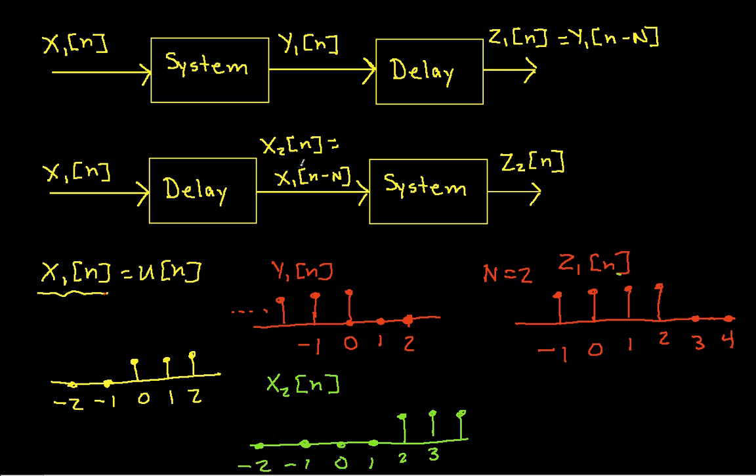So this x2 is now a signal that goes into my system. And again, my system, as we showed up here, takes the input signal and flips it about the value n is equal to 0. So when I do the flipping over here, we have 0, and then negative 1, negative 2, and negative 3 become 1, 2, and 3. 1 becomes negative 1. And 2, which has a value of 1, becomes negative 2, negative 3, negative 4, and so on. So this would be z2 of n.